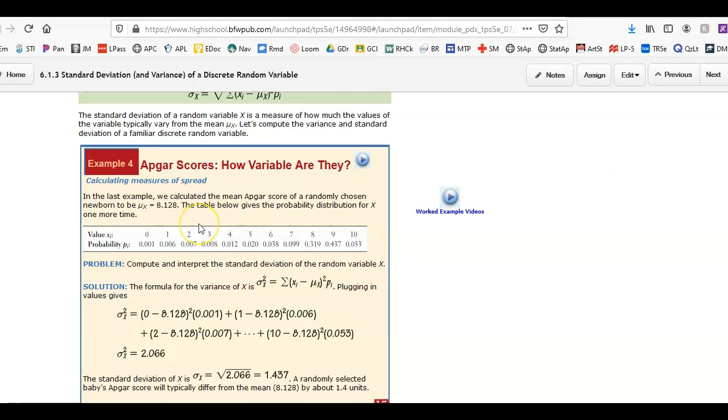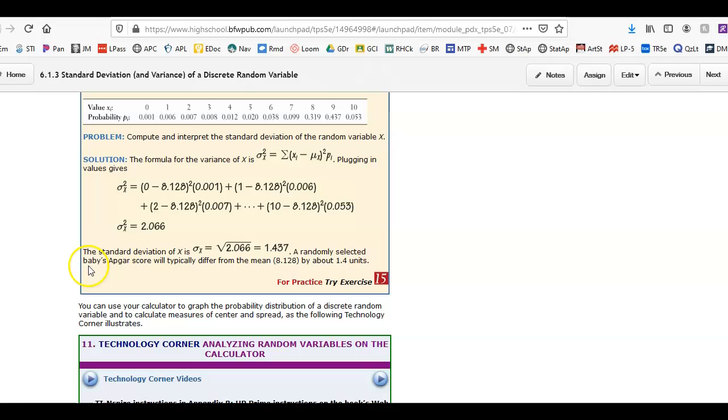So in order to figure out the standard deviation, you need to calculate the mean first. Here the mean was 8.128. So you can see they're taking each value minus that mean, squaring the value and multiplying it by the probability or the weight. Summing all these up, that gives you the variance of the data. Take the square root to get the standard deviation. So you can see an interpretation here. A randomly selected baby's APGAR score will typically differ from the mean by about 1.4 units.